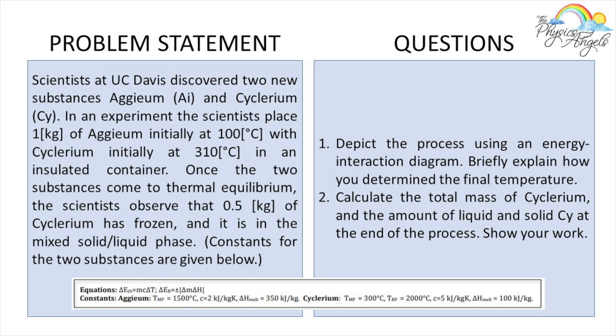This is the problem we're working on today. Scientists at UC Davis discovered two new substances, aginium and cyclerium. In an experiment, scientists placed one kilogram of aginium initially at 100°C with cyclerium initially at 310°C in an insulated container. Once the two substances come to thermal equilibrium, the scientists discovered that 0.5 kilograms of cyclerium has frozen and it is in the mixed solid-liquid phase.